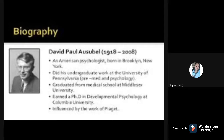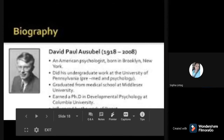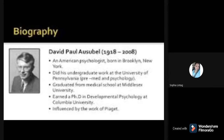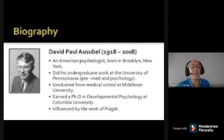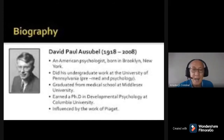He earned his PhD in developmental psychology at Columbia University, influenced by the work of Piaget — another psychologist and theorist. So let us now look at David Paul Ausubel's theory.